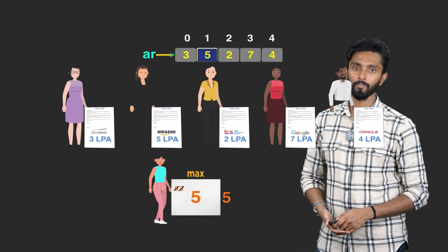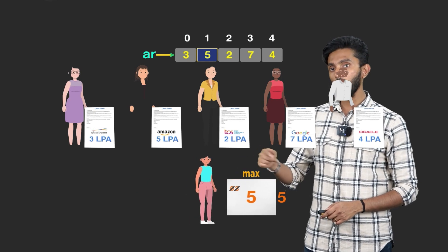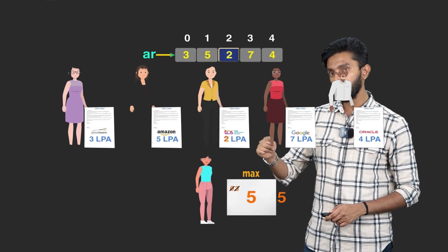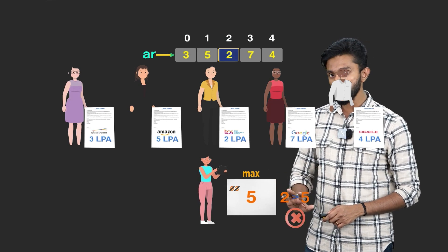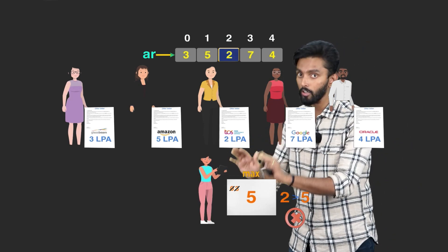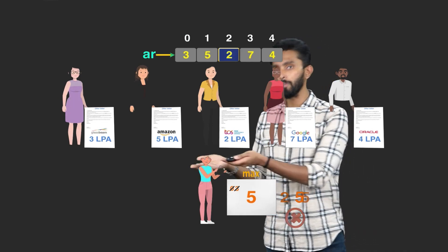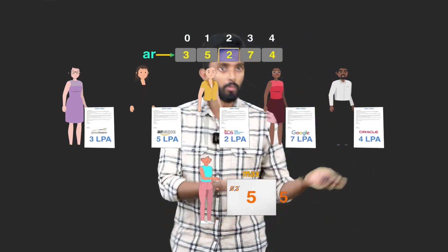Again, I will be like, move forward. Next, I will be like, compare 5 with 2. Now, tell me, is 2 greater than 5? Answer is no. If it is no, don't touch the Max. Because right now, Max is 5 only. Nothing happens. Very good. I will move forward again.